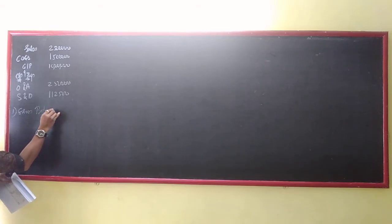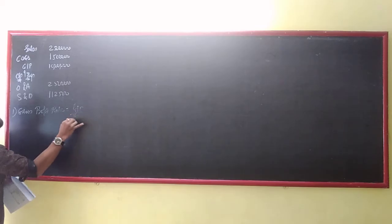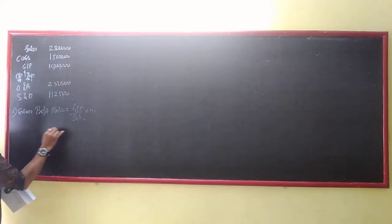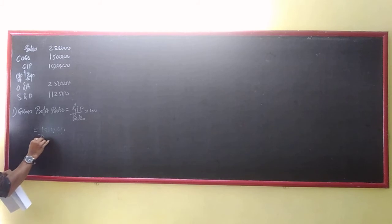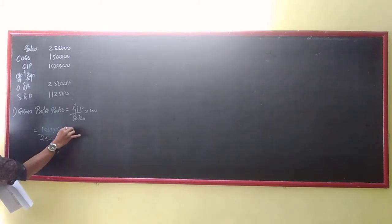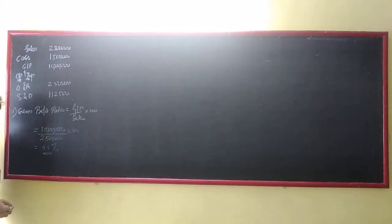First one is the gross profit ratio. Gross profit ratio equals gross profit upon sales into 100. Gross profit is 10 lakhs, sales is 25 lakhs. So 10 lakhs upon 25 lakhs into 100 equals 40%.